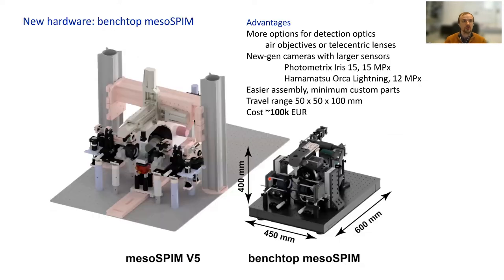Besides improvement on software, we also have a new hardware project called Benchtop mesoSPIM. It is shown here in CAD model compared to the previous version. It is a much smaller footprint, lower cost, uses air objectives or telecentric lenses, and larger sensor cameras, for example Photometrics Iris 15. It is much easier to assemble with fewer custom parts, and its cost is almost half of the previous version.